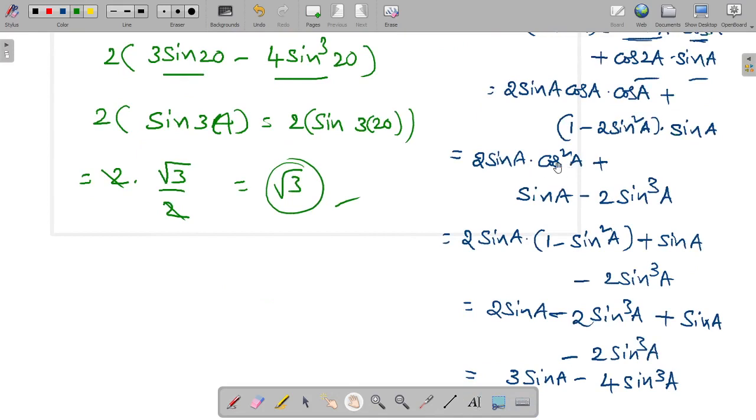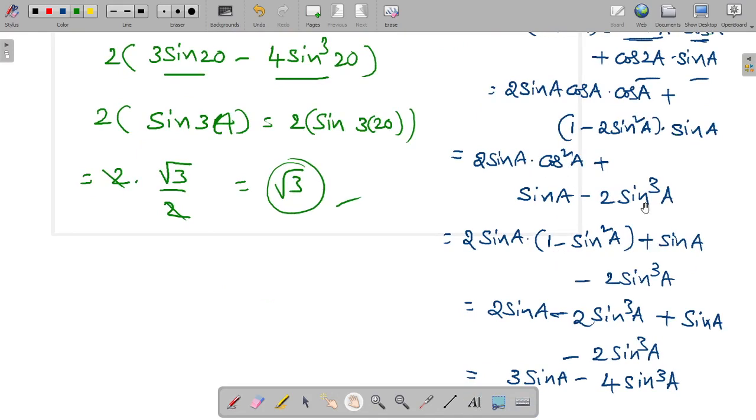2 sine A into cos square A is written as 1 minus sin square A plus sin A minus 2 sine cube A. 2 sine A into 1, 2 sine A. 2 sine A into sin square A, 2 sine cube A minus. Plus sin A minus 2 sine cube A.